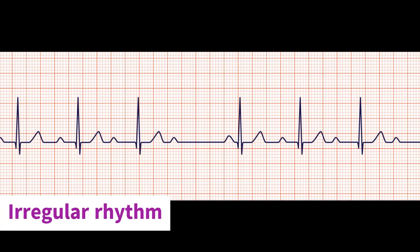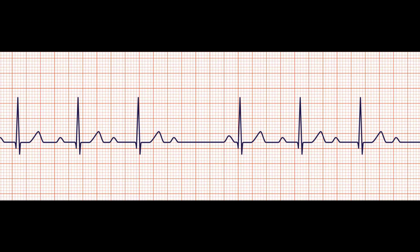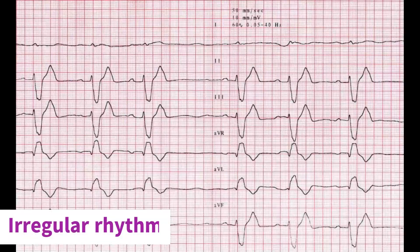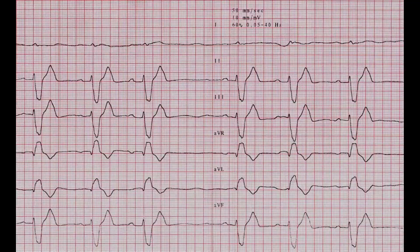This EKG rhythm is definitely irregular. You can tell by the unequal R-R intervals. And here is another example of an irregular rhythm on a 12-lead EKG strip.